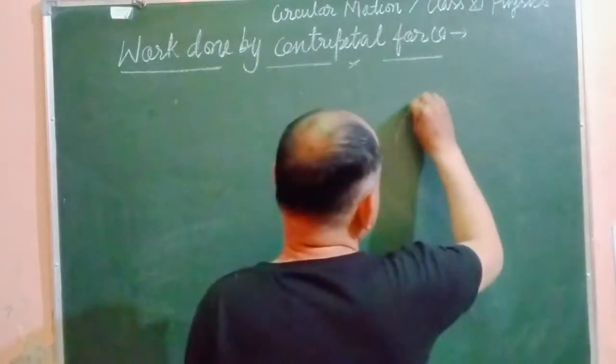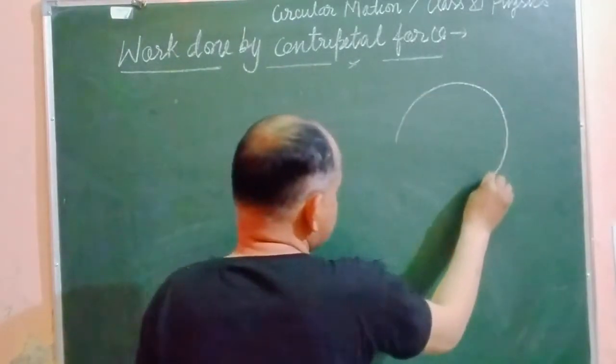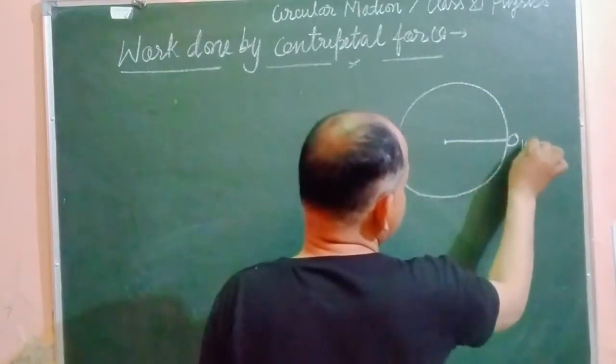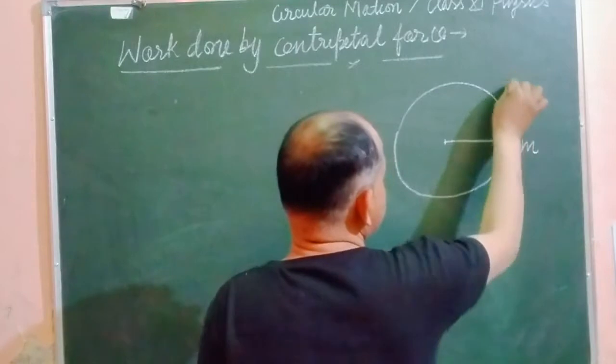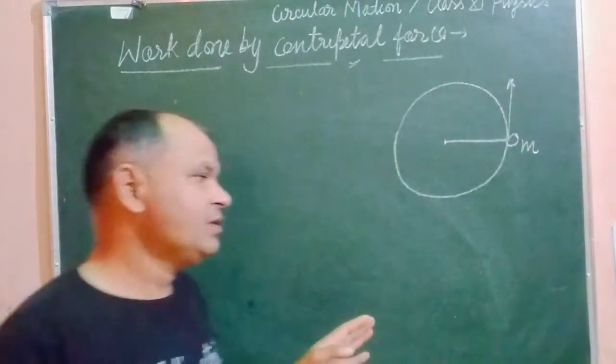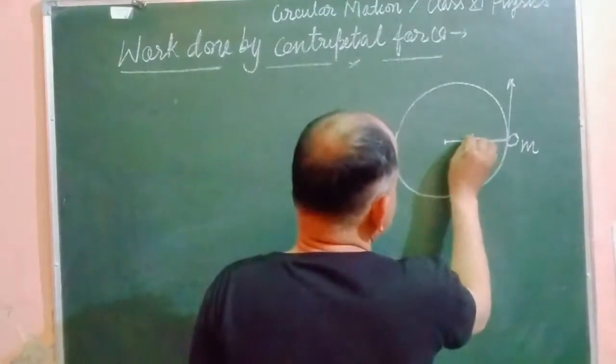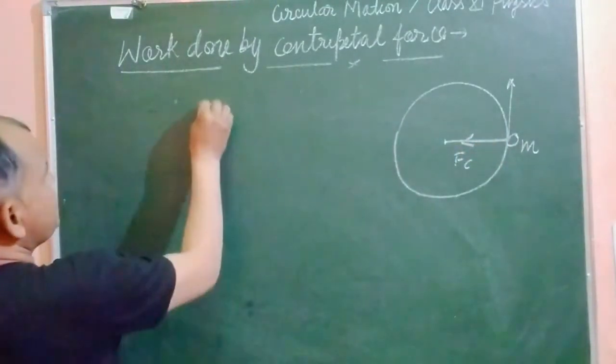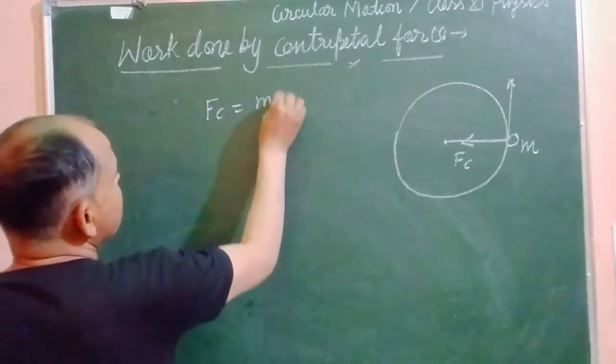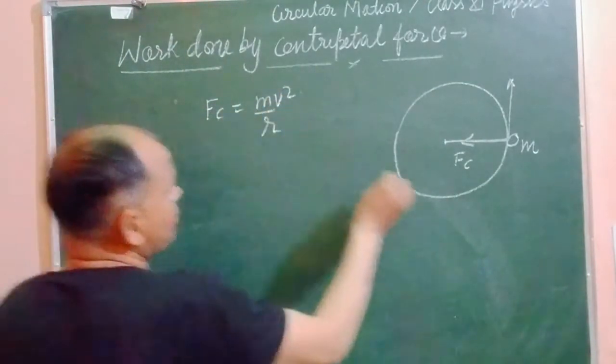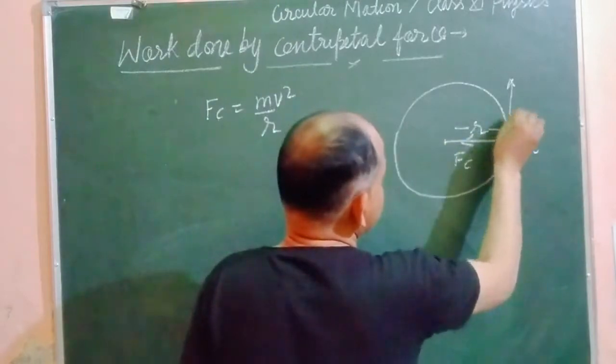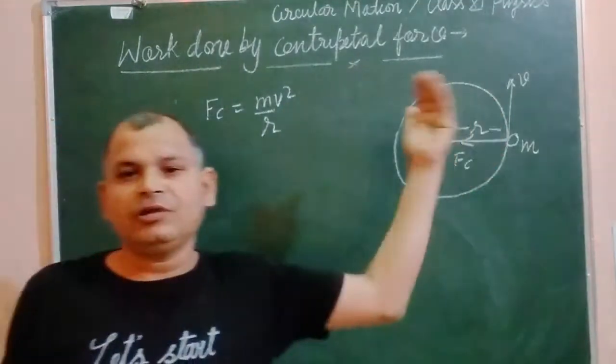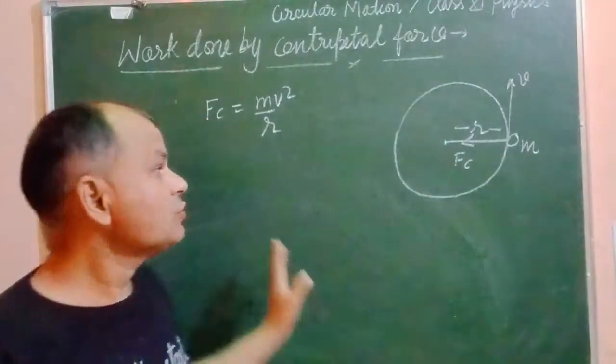So this is a circular path at which a body of mass M is revolving. This force which is towards the center is known as centripetal force, Mv² over r. This is r and this is velocity of the particle which is revolving on a circular path.